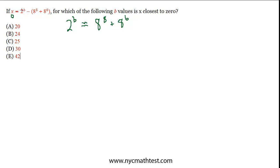So 8 to the 8th and 8 to the 6th are too large to compute. Even with a calculator, they're probably too large. So we're going to have to use some exponential equivalent to think about this. So let's recall that 8 is 2 cubed.